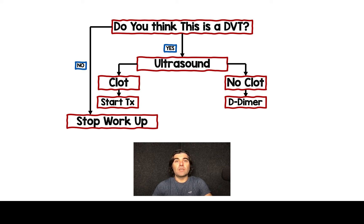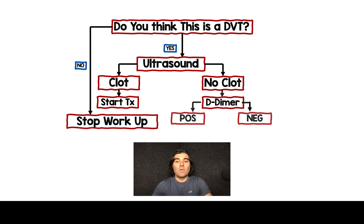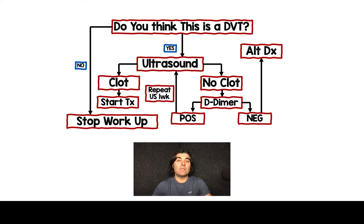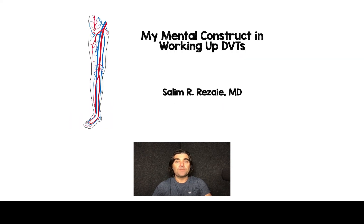A lot of people may not think that this is necessary, but you're going to miss some DVTs if you don't do this additional step. If the D-dimer is negative, then you can assuredly say that there's an alternative diagnosis to the patient's leg pain and swelling. If it's positive, that patient needs to come back in one week to have a repeat ultrasound. You will catch some DVTs using this strategy. There's my mental construct.